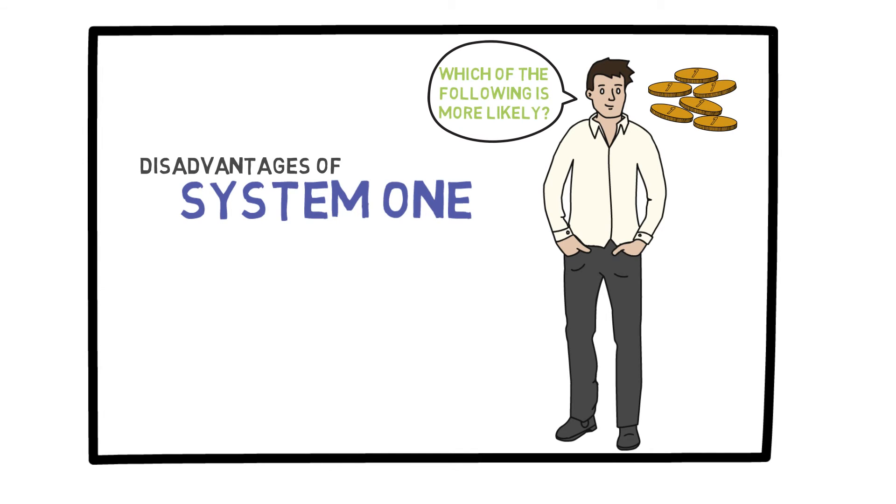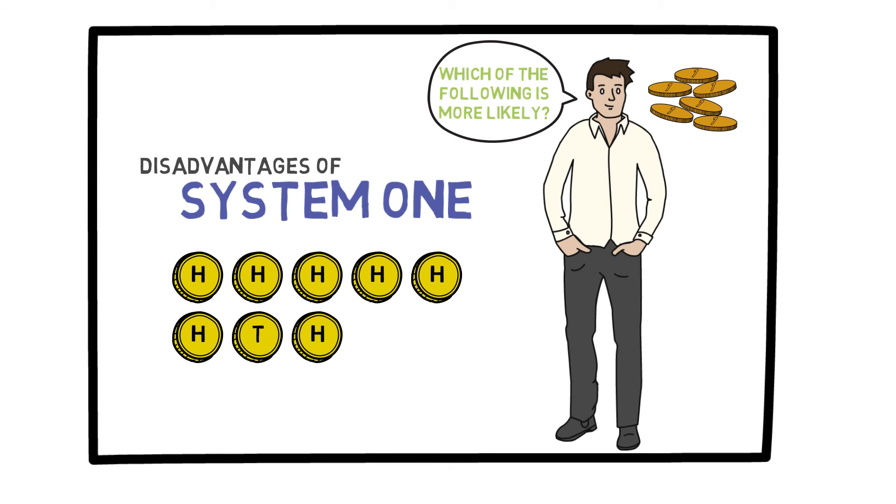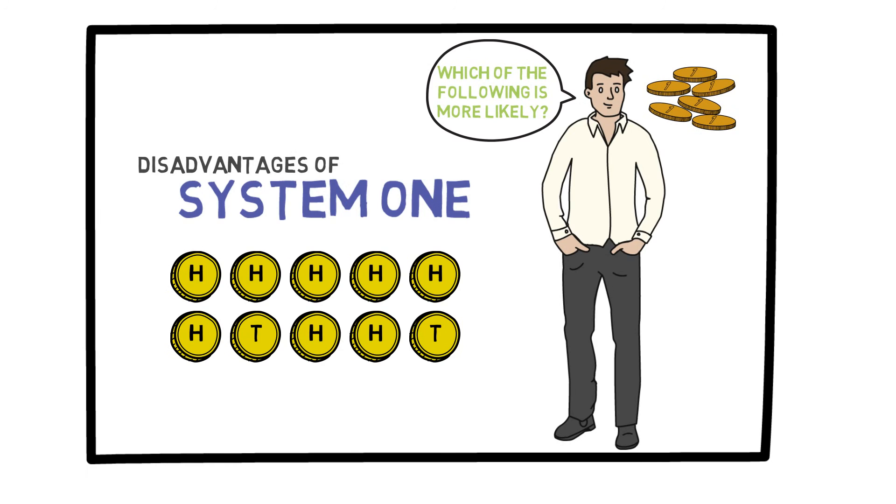The first outcome is that I observe five heads in a row, and the other outcome is that I observe heads, then tails, heads, heads, and another tails. Now, my question for you would be, which one is more likely?